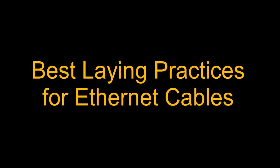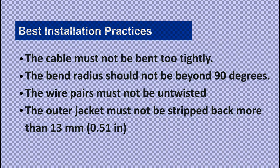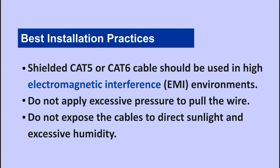It is always recommended to follow best installation practices for best performance. The cable must not be bent too tightly — the bend radius should not be beyond 90 degrees. The wire pairs must not be untwisted, and the outer jacket must not be stripped back more than 13 mm. Shielded Cat5 or Cat6 cable should be used to avoid data corruption in high electromagnetic interference environments. Do not apply excessive pressure when pulling the wire, and do not expose cables to direct sunlight or excessive humidity.